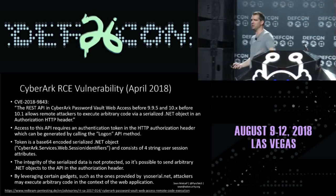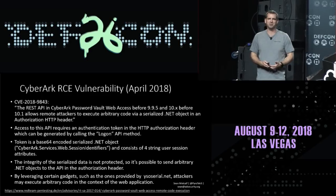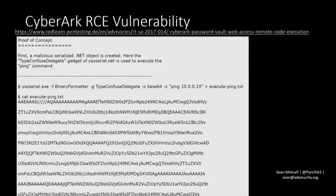There was a CyberArk RCE vulnerability a few months ago — it had to do with a serialized .NET object in the authorization HTTP header. A pen test team realized they could modify information sent to a built-in API on the web server and use YSO serial to modify it — they could run ping on that system or execute other commands. That's about as bad as it can get.